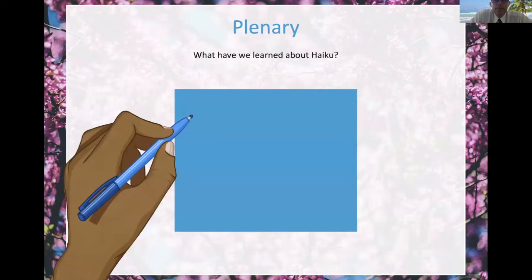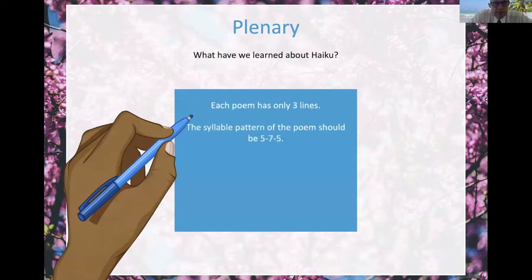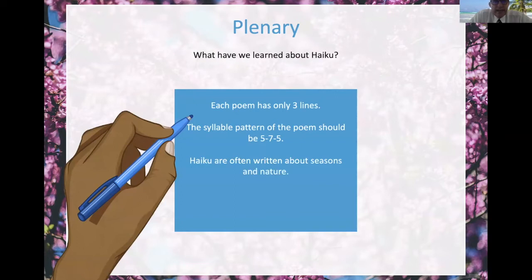Don't forget a haiku has three lines — that won't take long, will it children. The syllable pattern should be five for the first line, seven syllables for the second line, and five for the final. Usually about seasons or nature, animals — up to you.